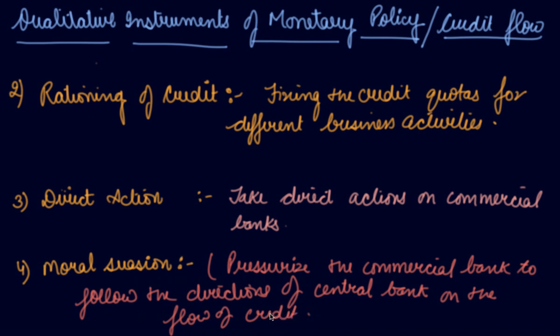So the central bank tries to persuade the commercial banks to follow its direction of monetary policy, otherwise they can take actions against the commercial bank. These are the qualitative instruments of monetary policy to control the credit flow in the market.